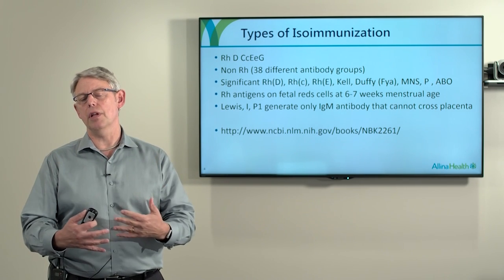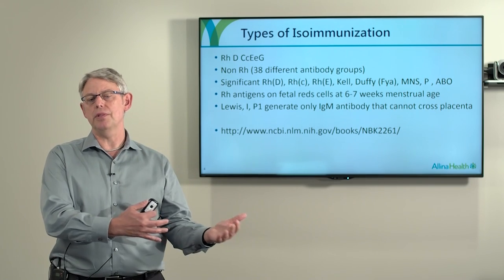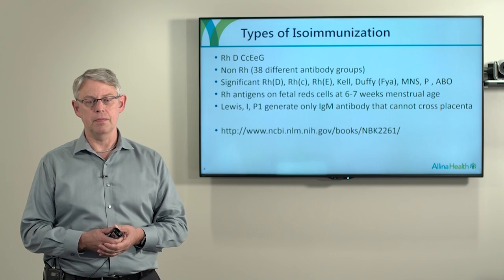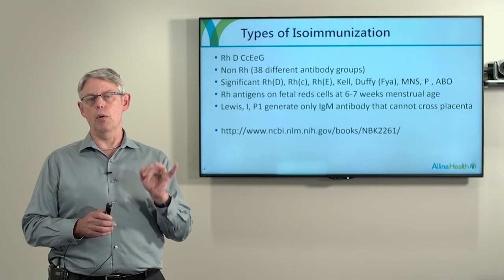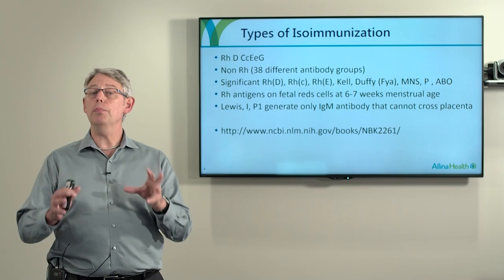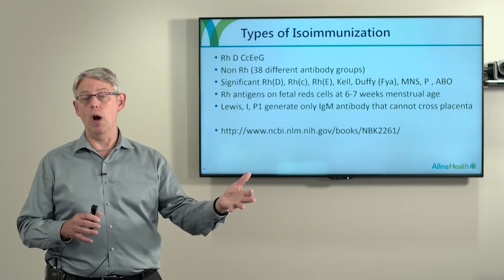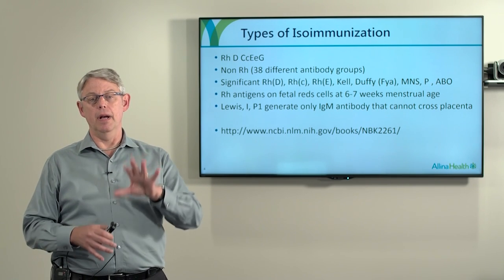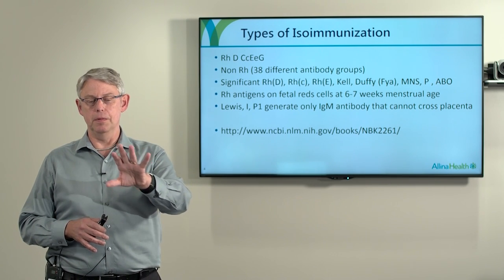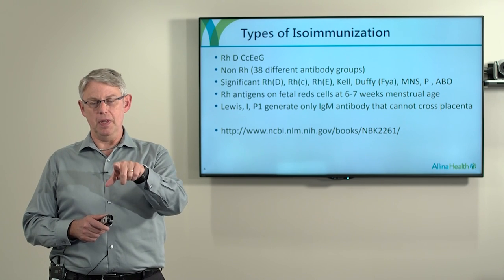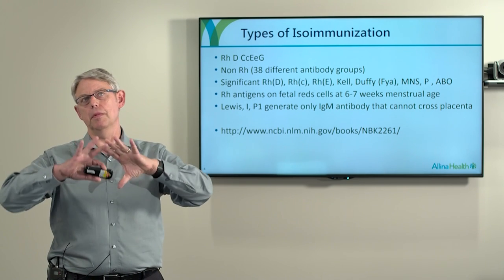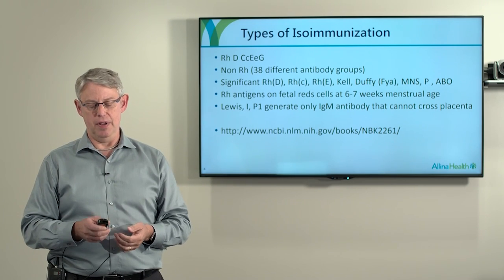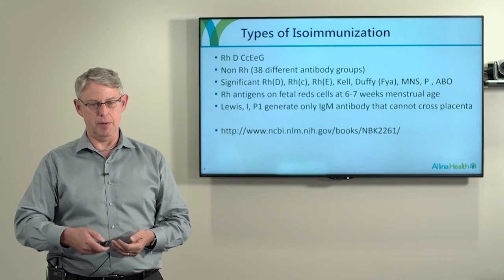The reason that miscarriages can potentially generate a response is that there are RH antigens on fetal red cells as early as six to seven weeks of menstrual age. There are some antibodies that are only IgM in nature and they're too big to cross the placenta. So Lewis, P1, and I are not big enough to cross the placenta, so they will not affect the fetus. There is also a reference — a book generated by the NIH which shows gene frequencies of all these antigens — which I actually carry around with me all the time.